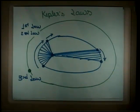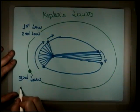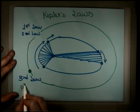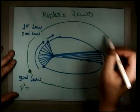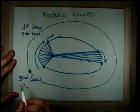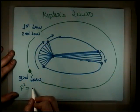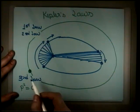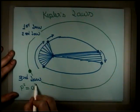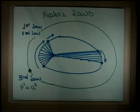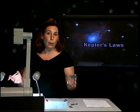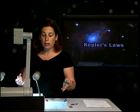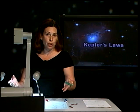So the third law states that the period, the amount of time that it takes for a planet to go around the sun squared, is proportional to the average distance from the planet to the sun cubed. And this is an empirical relationship. And Kepler didn't know why it was that way. He just noticed that was a relationship.